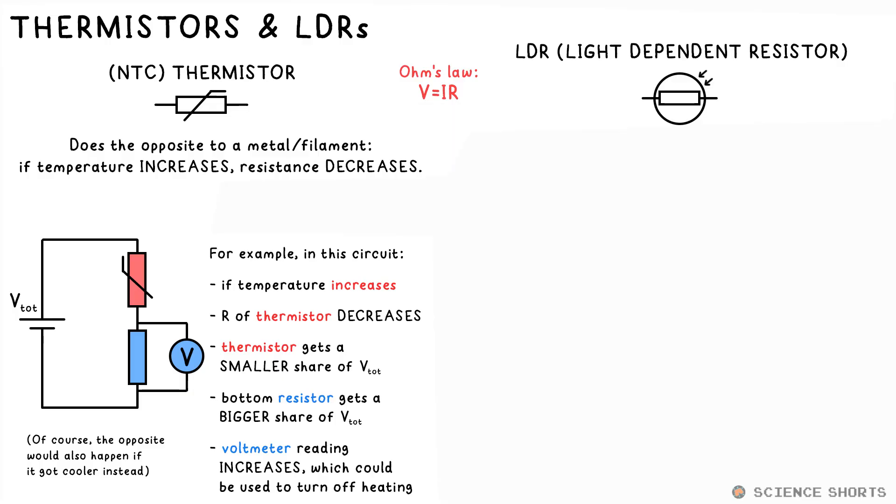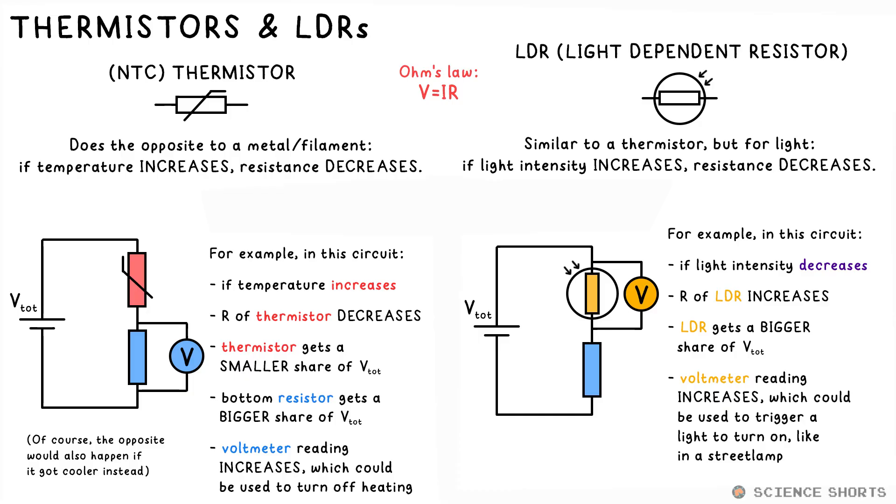An LDR is a light-dependent resistor, very similar to a thermistor, but resistance goes down with increased light intensity, not temperature. So, this circuit could be on the top of a street lamp, for example. Light intensity goes down, resistance of the LDR goes up, as does its share of the voltage. This could then be connected in some way to the light bulb, so it turns on as it gets dark.